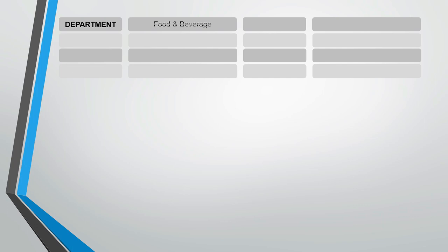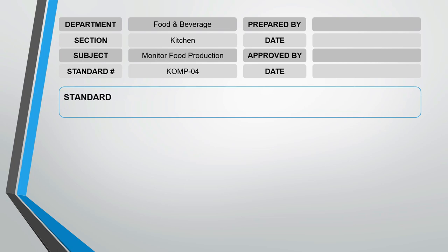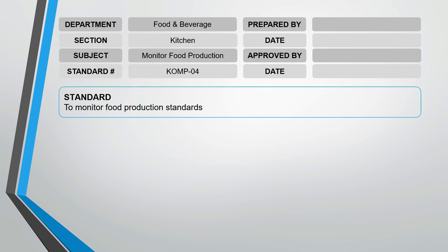Department: Food and Beverage. Section: Kitchen. Subject: Monitor Food Production. Standard Code: COMP-04. Standard: To monitor food production standards and procedures.